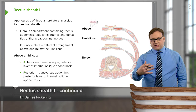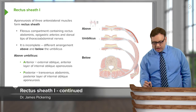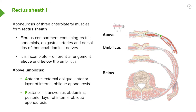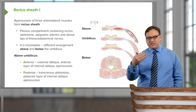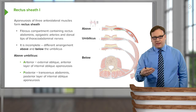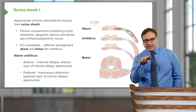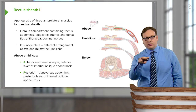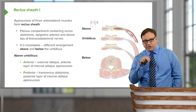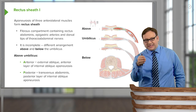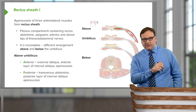Anteriorly to the rectus abdominus muscle, we have the aponeurosis of external oblique, and posterior to rectus abdominus we have the aponeurosis of transverse abdominus. What happens to internal oblique? The internal oblique muscle, as it approaches rectus abdominus, splits into two. The aponeurosis of internal oblique splits into two laminae: an anterior lamina and a posterior lamina.